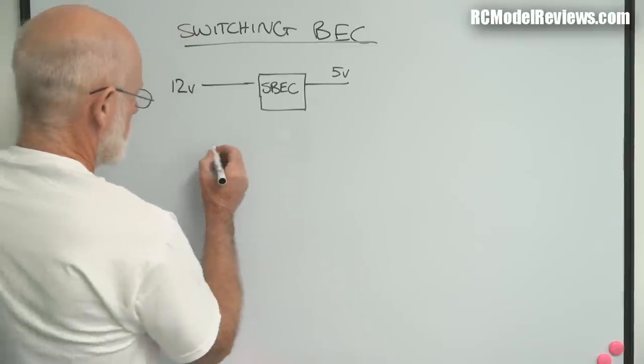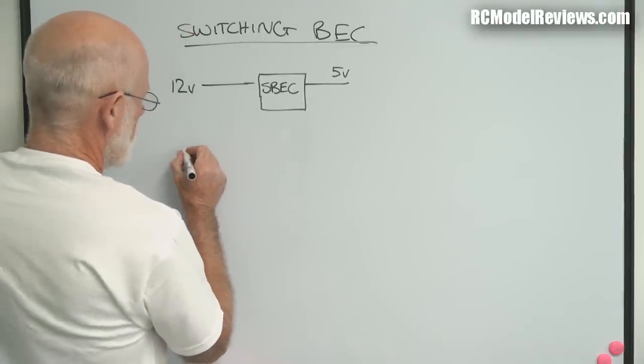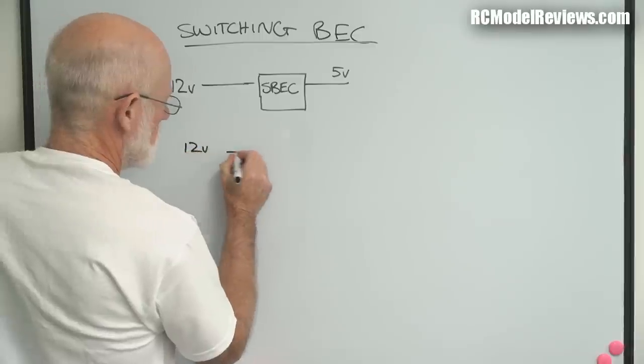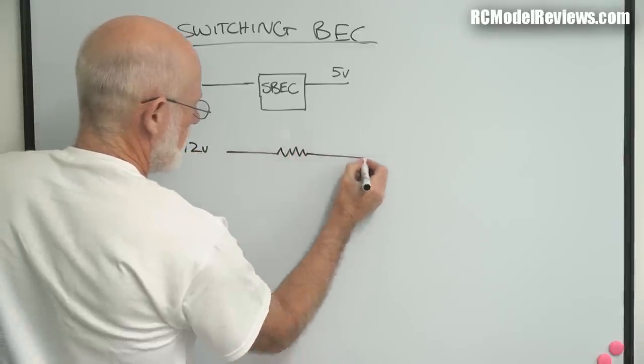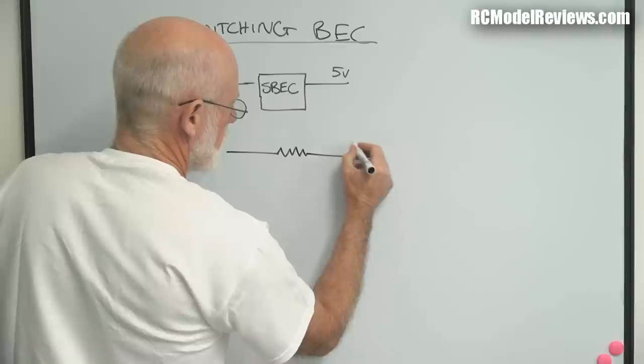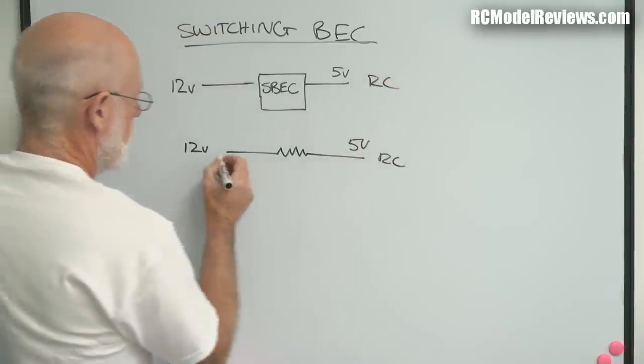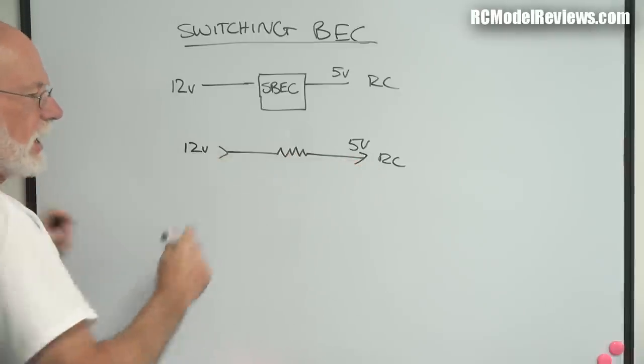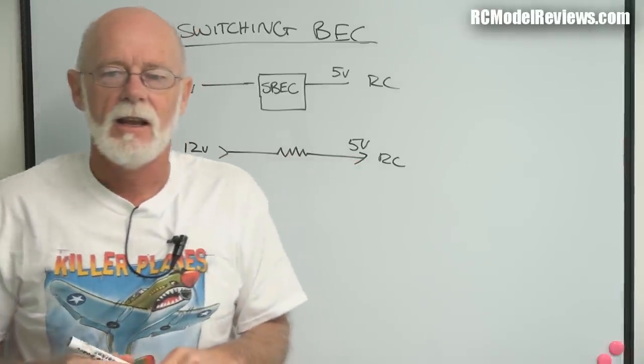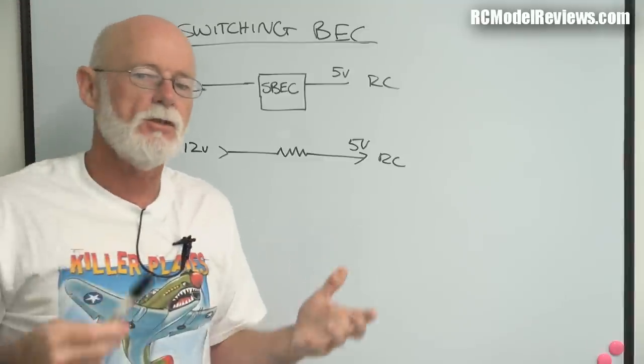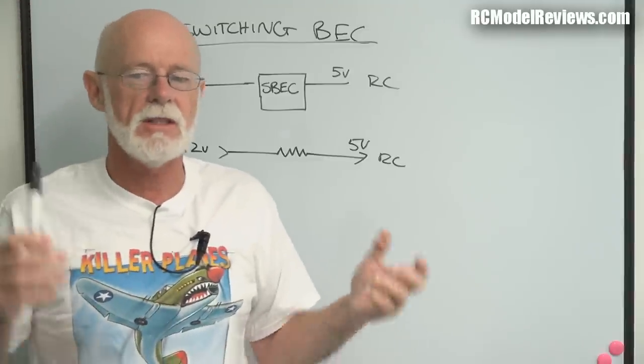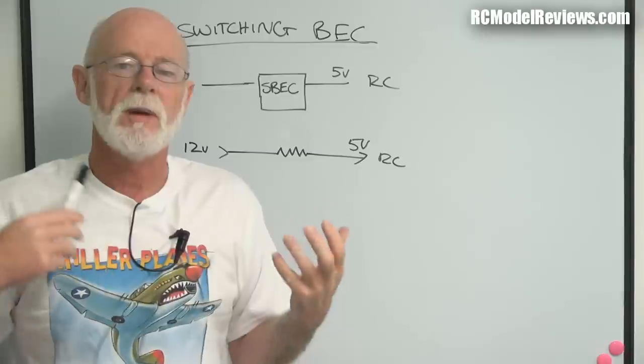Obviously, once you start running more voltage on this side or drawing more current on that side, then you need something that's more efficient than a linear BEC. And that's what SBECs are. And to understand how SBECs are more efficient than linear BECs, we have to look at how they work. This is how a linear BEC works. Basically, it's just like having your 12 volts and a resistor and your RC gear out here. That's how your linear BEC works. It's just like having a resistor in there. A resistor, let's draw some analogies. This is a broad analogy, hopefully I'll help people understand. A resistor is like friction to electricity.